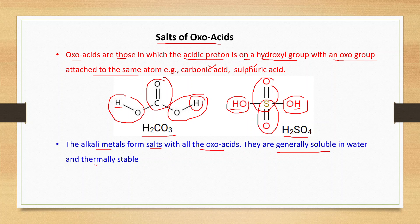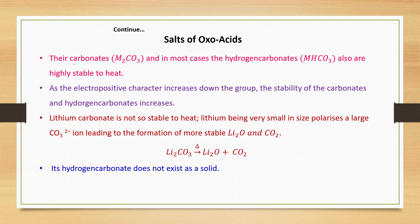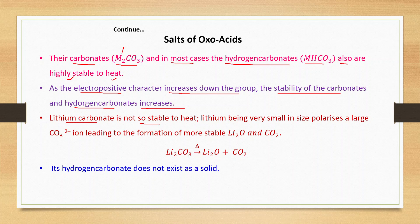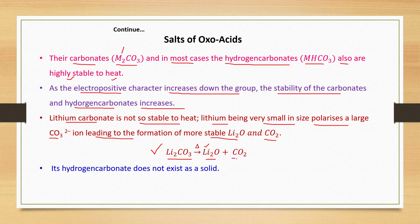The alkali metals form salts with all the oxoacids; these are generally soluble in water and thermally stable. Their carbonates M₂CO₃ and, in most cases, the hydrogen carbonates MHCO₃ are highly stable to heat. As the electropositive character increases down the group, the stability of the carbonates and hydrogen carbonates increases. Lithium carbonate is the least stable; lithium, being very small in size, polarizes the large carbonate ion, leading to formation of lithium oxide and carbon dioxide: Li₂CO₃ on heating gives Li₂O and CO₂.